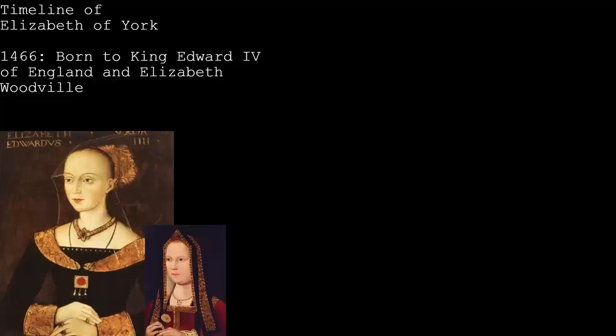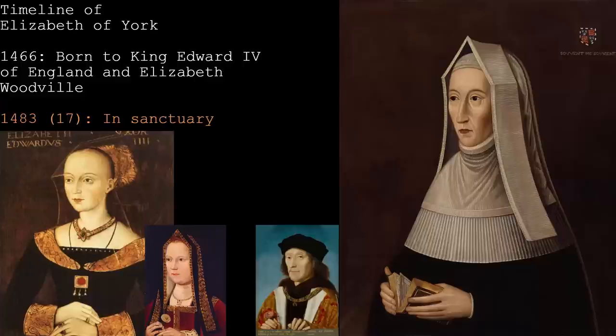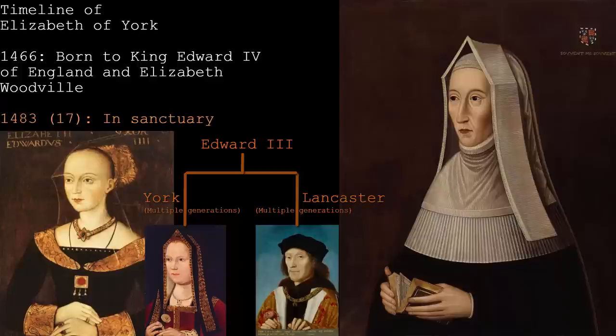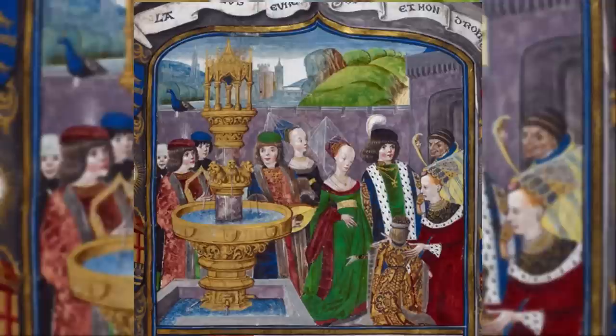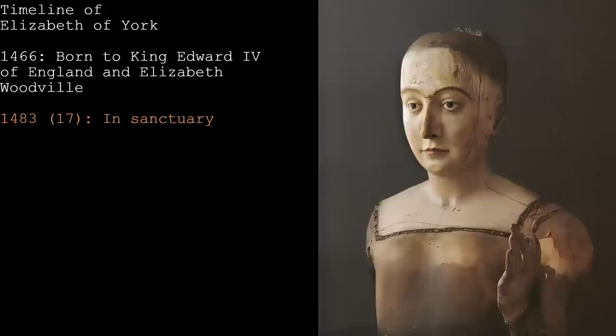By the end of the year, Elizabeth's mother and Henry's mother, Lady Margaret Beaufort, had been working hard to align themselves. Henry had a weak claim to the throne, but it would strengthen if he married Elizabeth, as that would unite the two houses of York and Lancaster. He also needed to first take the throne, so in December 1483, Henry swore an oath promising to marry her and began his invasion.